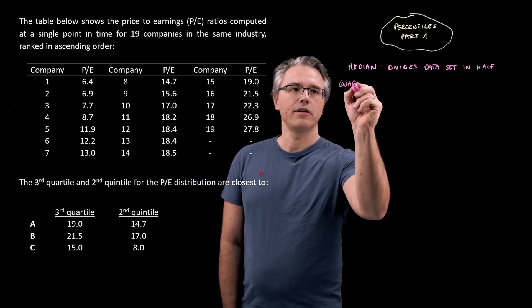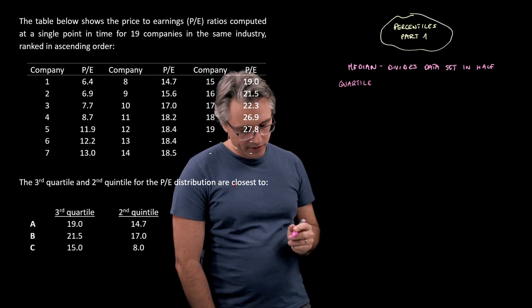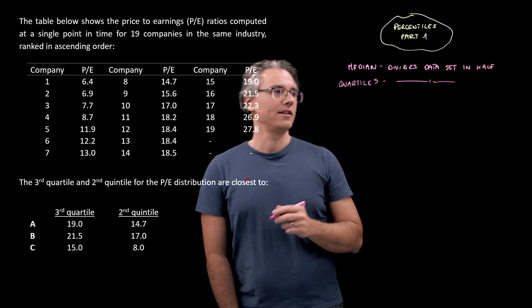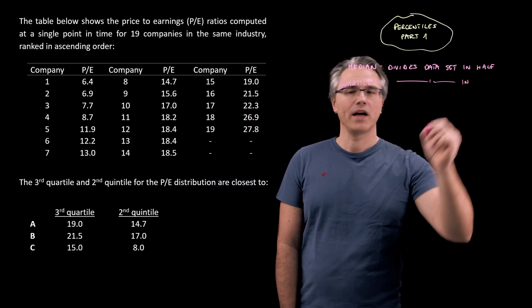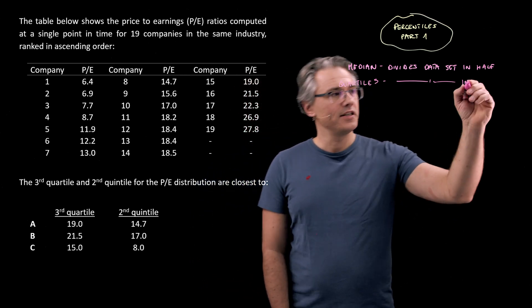We also have other points. These are going to be quartiles, and quartiles do the same thing. They divide the data set, but as you can logically guess, it's not going to be in half. It's going to be in quarters.